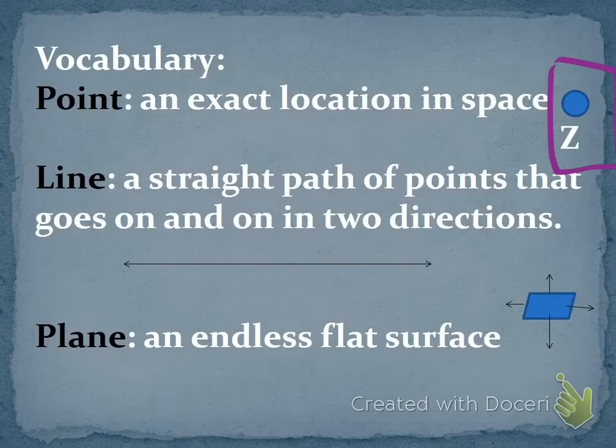A line: a straight path of points that goes on and on forever in two directions. We identify a line specifically because of the arrows on the end of it. The arrows tell me that it never ends.